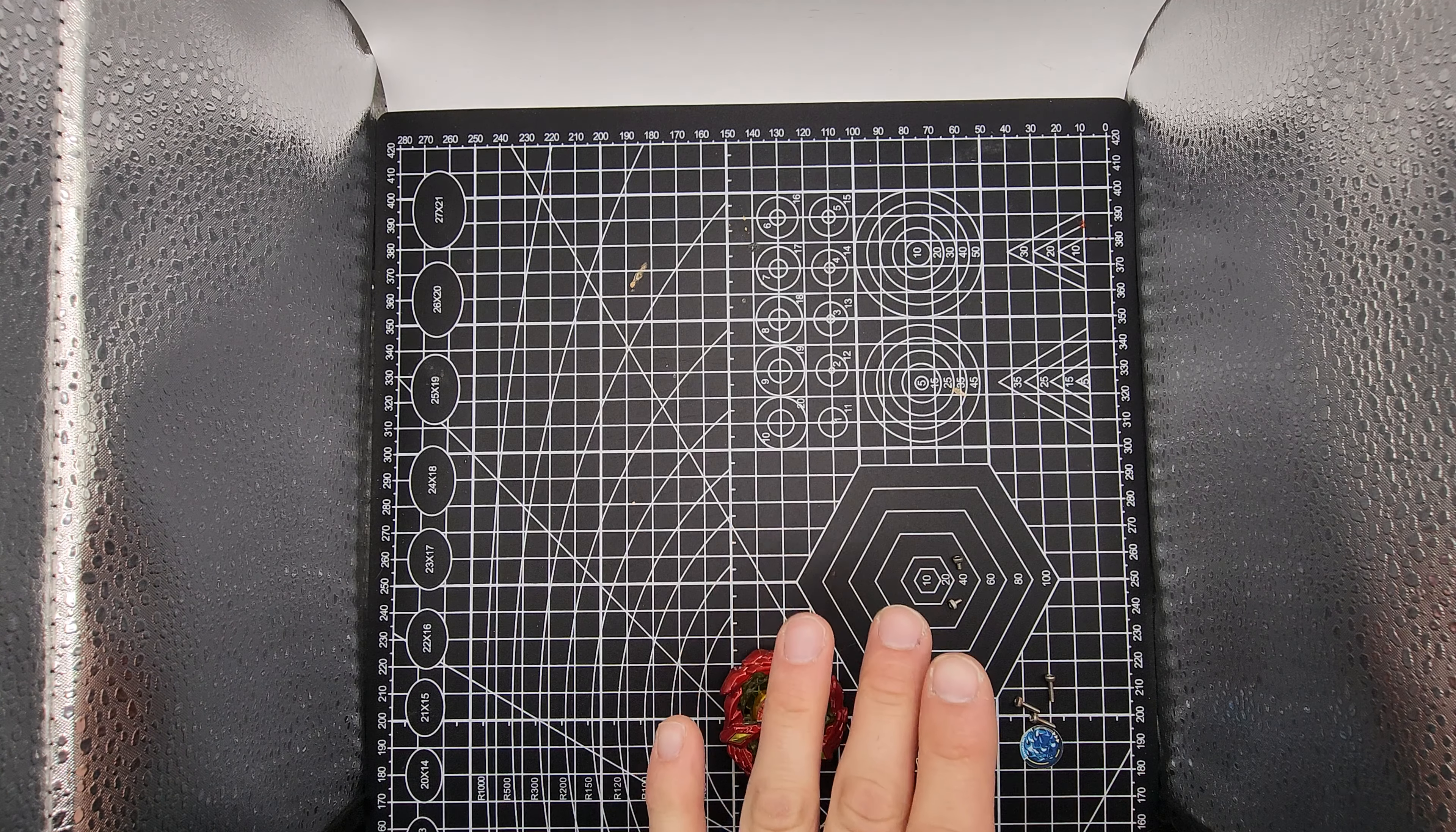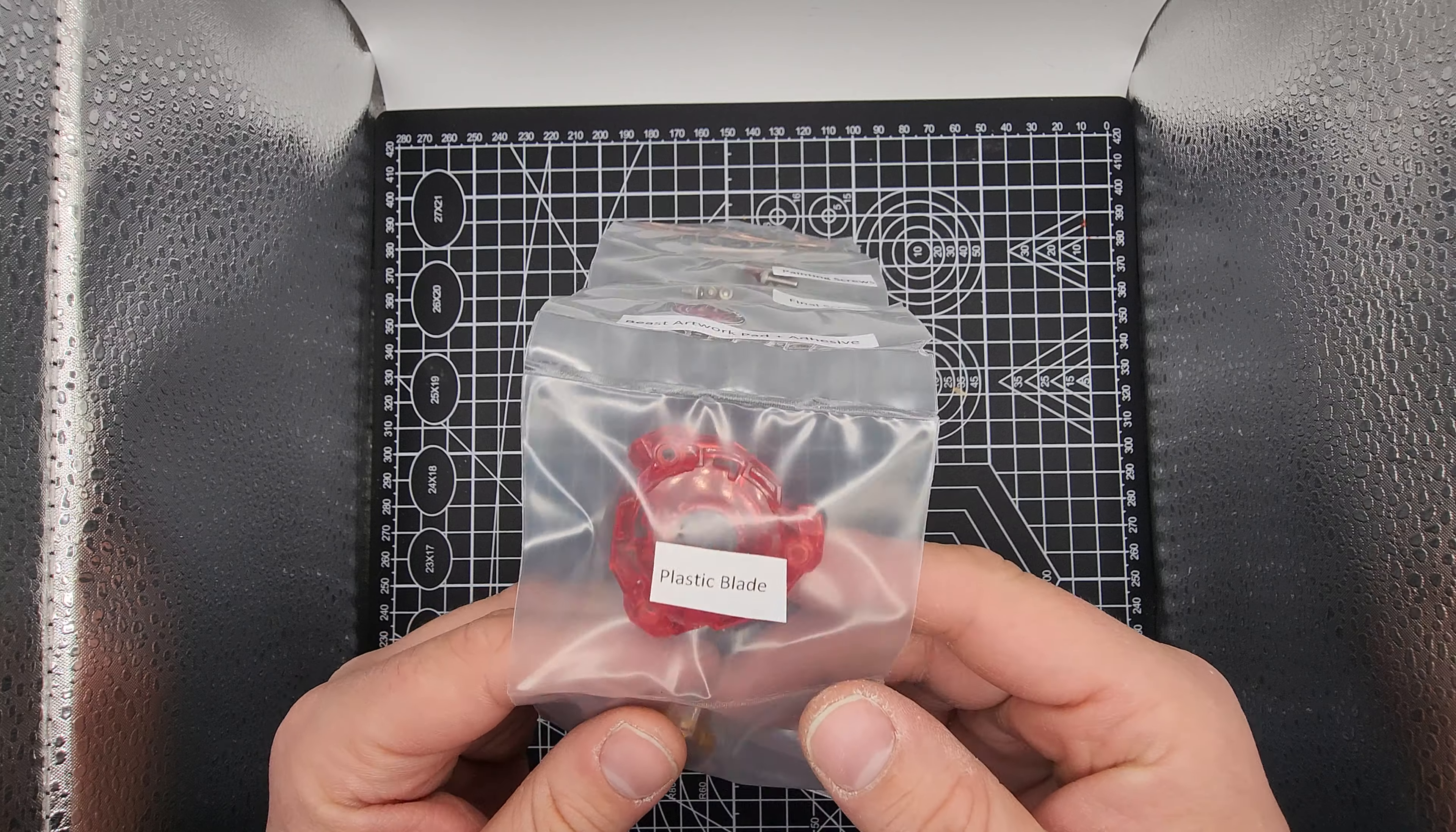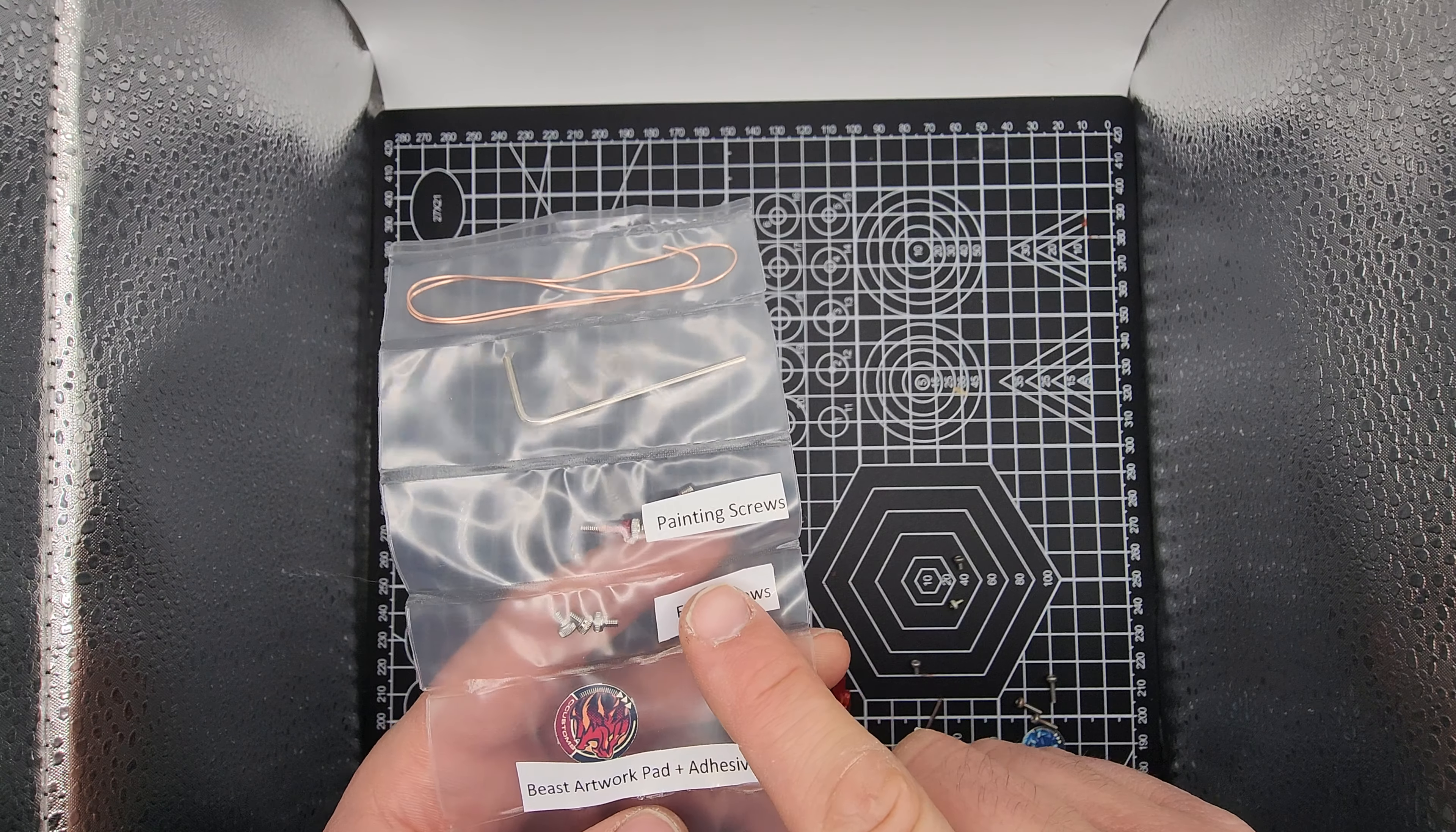All right, so introducing the do-it-yourself kits. Here's the kit and it will come with your blade, your beast gear and cover, plastic blade, artwork with adhesive pre-applied, your finishing screws,